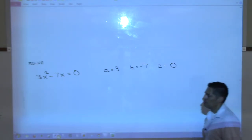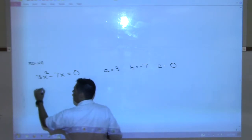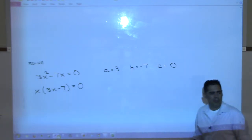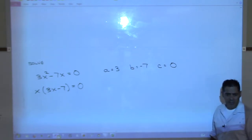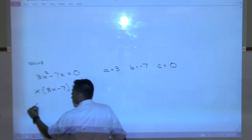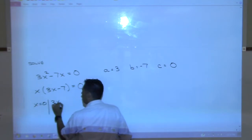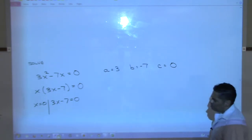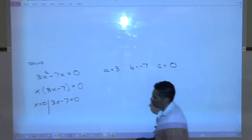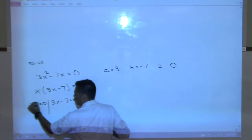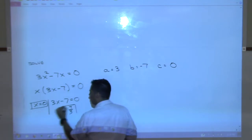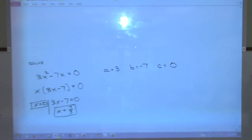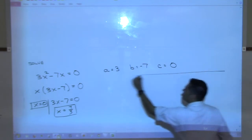The method for Case A is GCF - greatest common factor. You can pull out an x from both terms, leaving x times (3x minus 7) equals zero. Then set each factor to zero: x equals zero, and 3x minus 7 equals zero. Our two solutions are x equals zero and x equals seven-thirds. Add 7 to both sides and divide by 3.